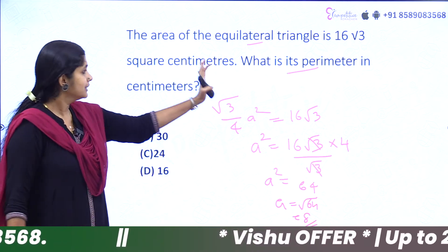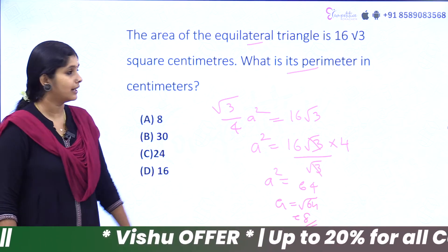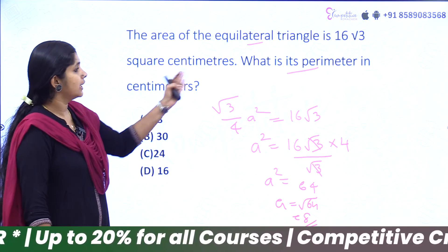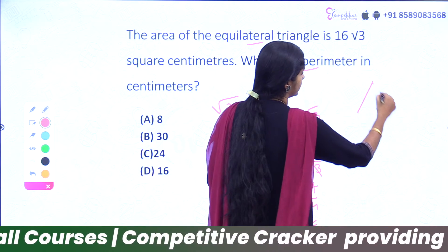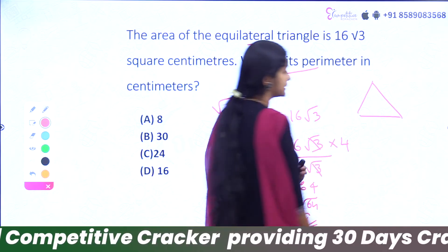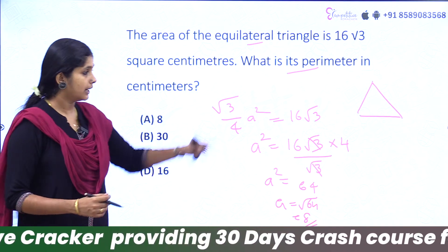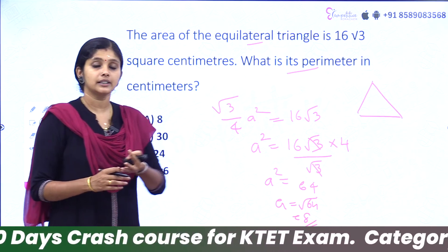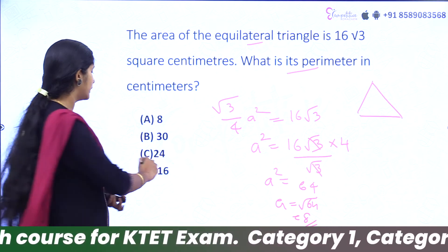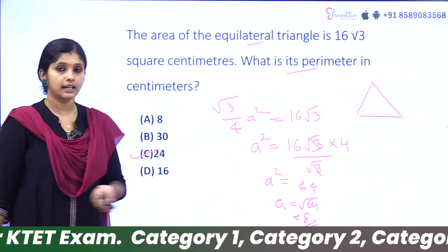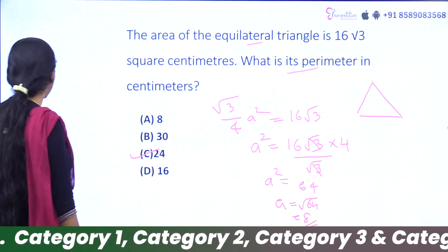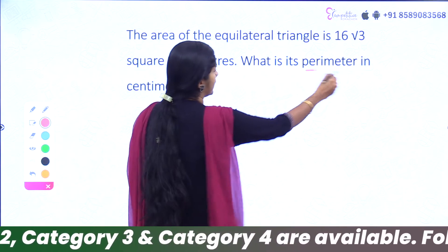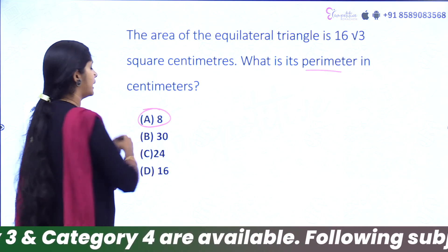We don't want just the side — we need the perimeter. If we calculate the perimeter of an equilateral triangle with side 8, that is 3 times 8. The perimeter is option C, equal to 24.